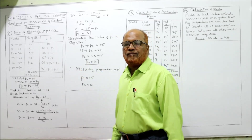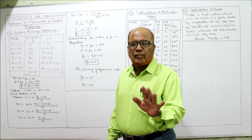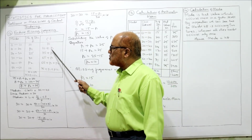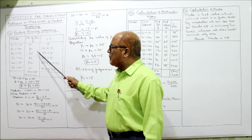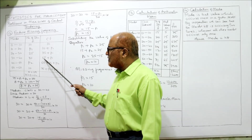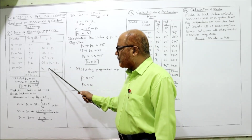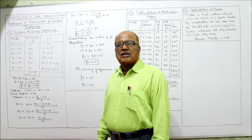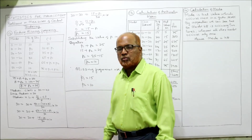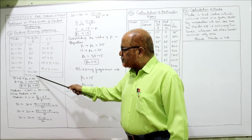Now we calculate the cumulative frequency (cf). We require cf for calculating median. The cf values are: 10, 10+p1, 35+p1, 65+p1, 65+p1+p2, 75+p1+p2. The total of frequency and the last cf should both be 75+p1+p2, confirming our calculations are correct. Since n = 100, we get 75 + p1 + p2 = 100.